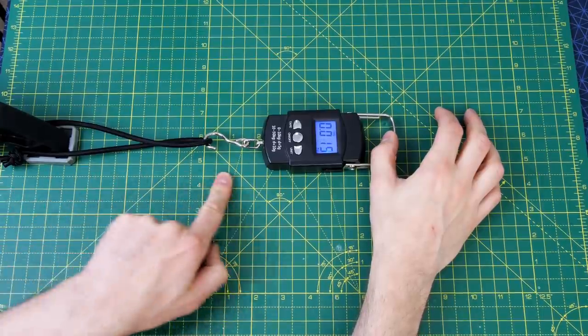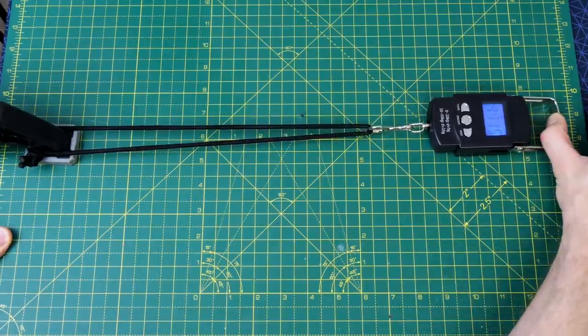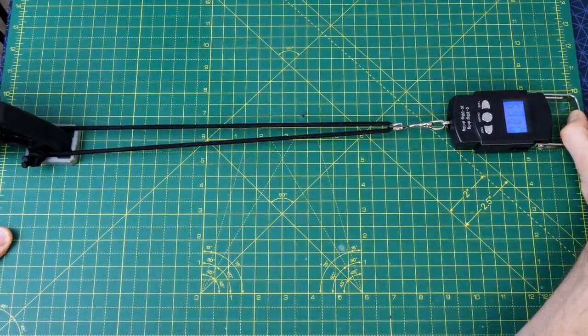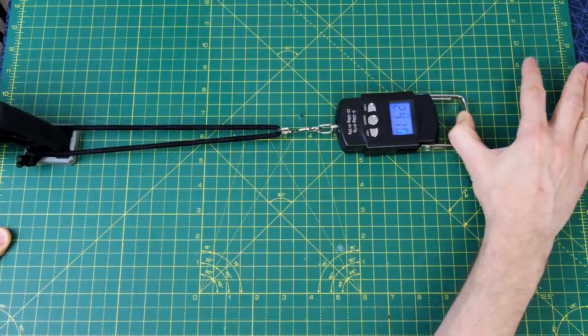And just for our control experiment, let's go back to the same piece of bungee just being stretched on its own with the scale, and we can see that the more we stretch it, the more force it takes to stretch. And that's what we wanted to avoid with the system of cams.